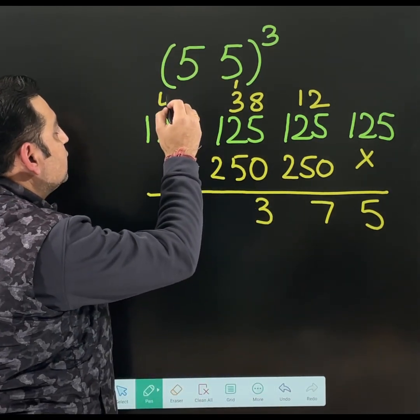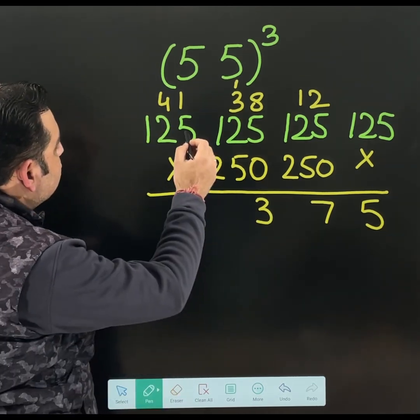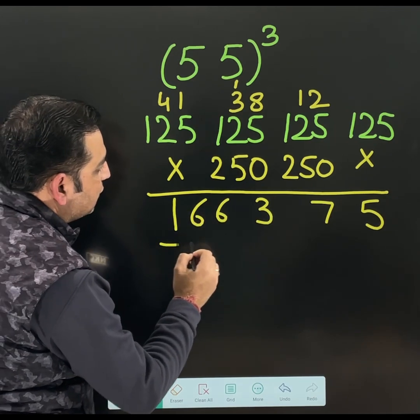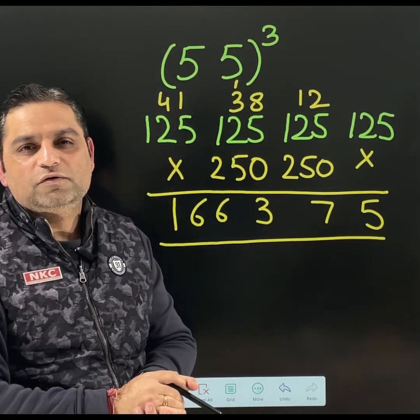Adding these 2. 5 plus 1, 6. 4 plus 2, 6. Then 1. 1, double 6, 3, 7, 5. This is the cube of 55.